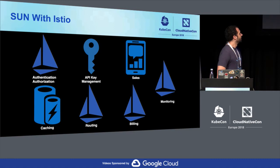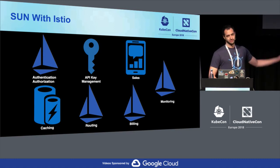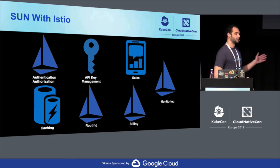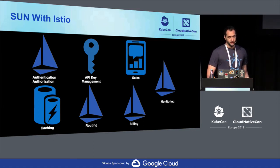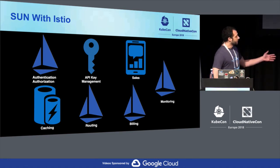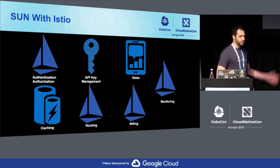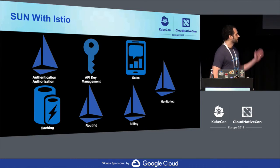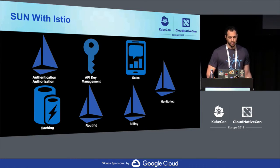We started looking at our platform and seeing a lot of things Istio could replace. It doesn't really replace everything, but it does integrate with a lot of tooling — specifically routing and monitoring are things we've probably replaced with Istio. It also integrates with billing systems and authentication and authorization, which was really appealing to us down the road. But initially we targeted routing and monitoring.